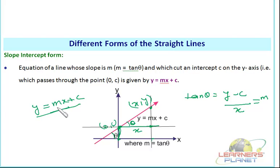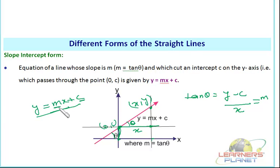Why do we call it the slope-intercept form? Because we have slope M and intercept C. So if we know the slope of the line and its intercept on the Y-axis, we can write the equation of the line. Only two unknowns are there: M and C. So if you know M and if you know C, you can make the equation of the line — that is the slope-intercept form, and that is really important.